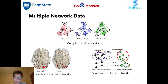The rapid growth of information in emerging applications has generated many interdependent networks, known as multiple networks. The first figure shows an example of three social networks, where each node represents an employee of a university. The three networks describe three types of relationships: whether they are coworkers, whether they have lunch together, and whether they are friends on Facebook.